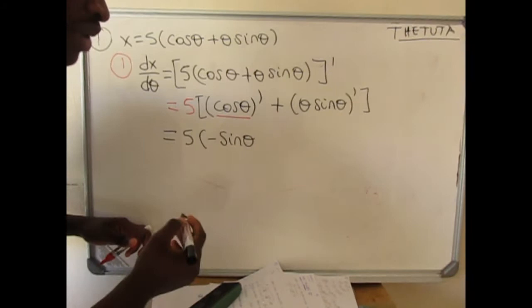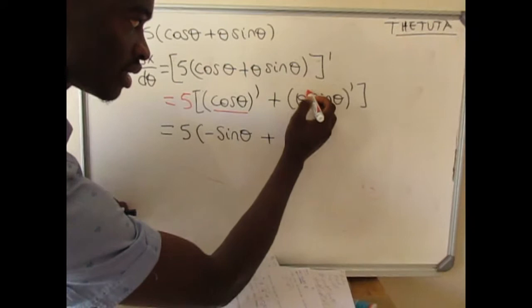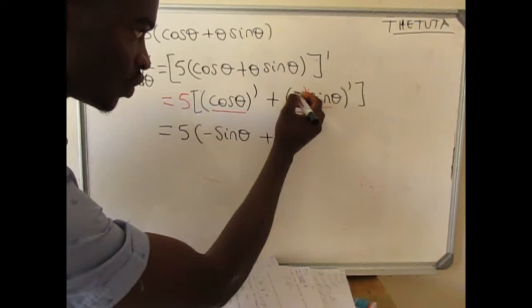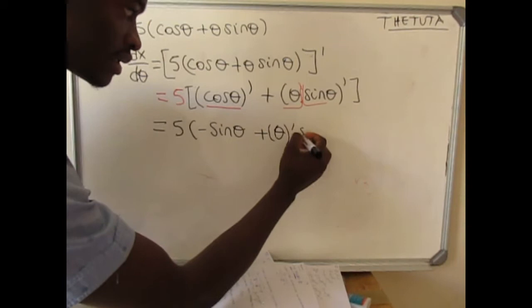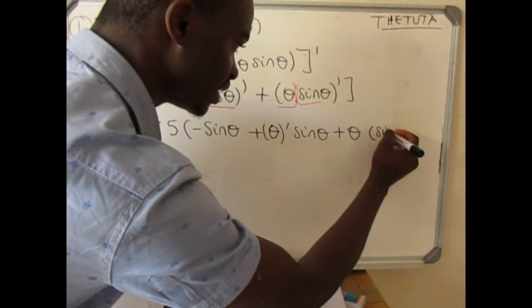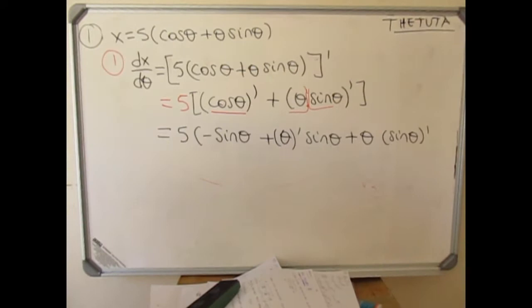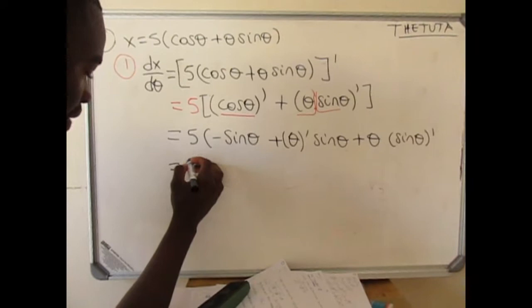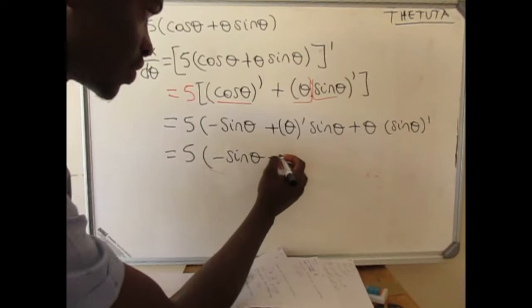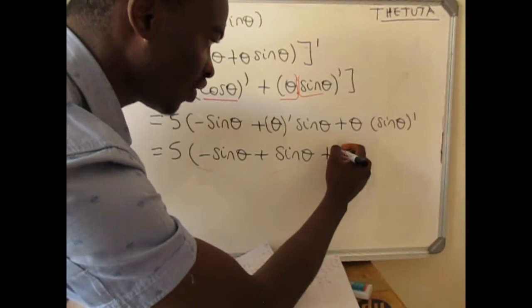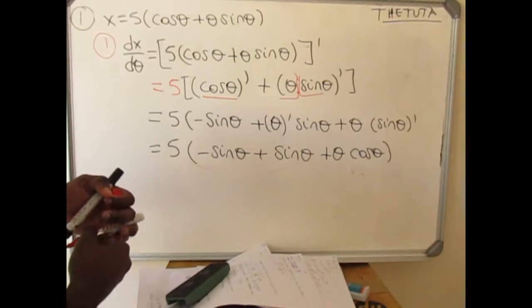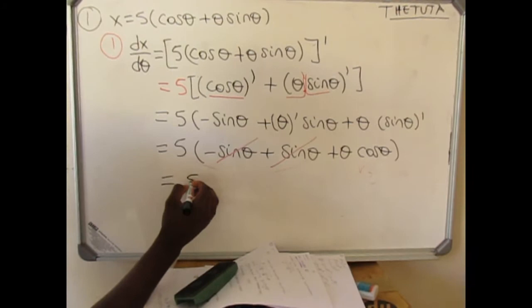Plus — if you look here, you observe a product rule of this function and that function. So you apply your product rule formula: you derive θ first times sinθ, plus θ times the derivative of sinθ. Going step by step: you have 5, then minus sinθ. The derivative of θ gives us 1, then you have sinθ. The derivative of sine gives us cosine. You can observe that these terms cancel each other, and therefore you are only going to remain with 5θcosθ.